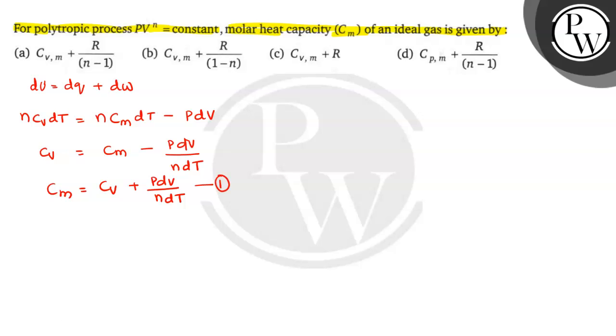Next part: PV^n = k constant, and we know that PV = nRT. So from this first equation PV^n = k, take P out: P = k/V^n.